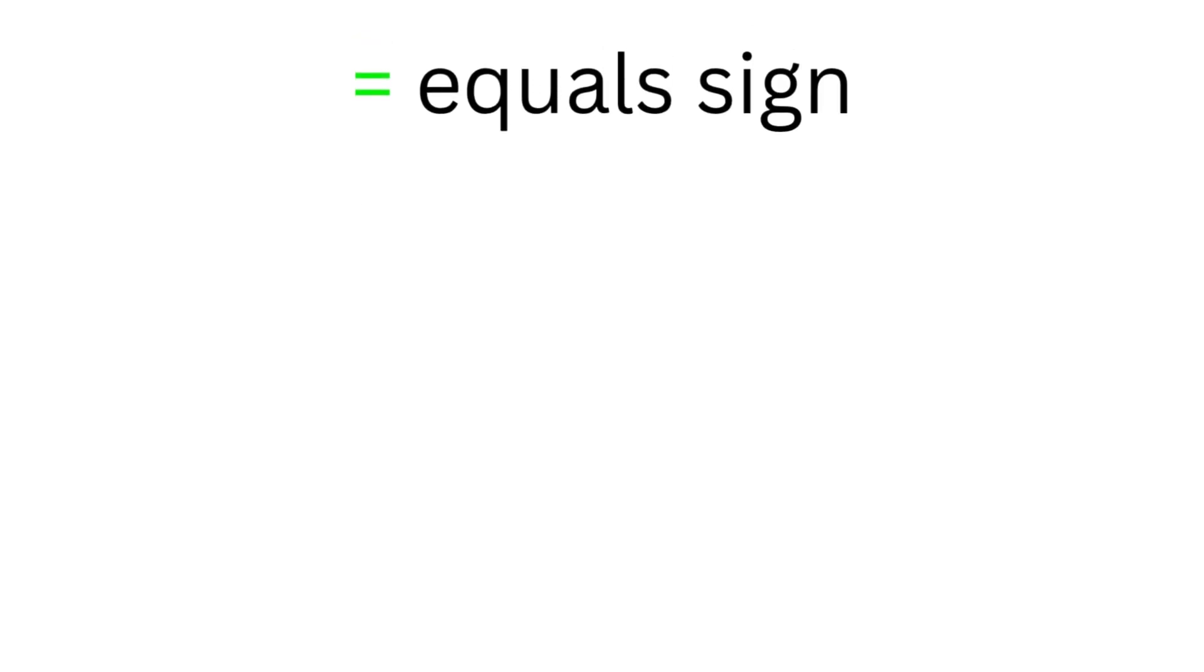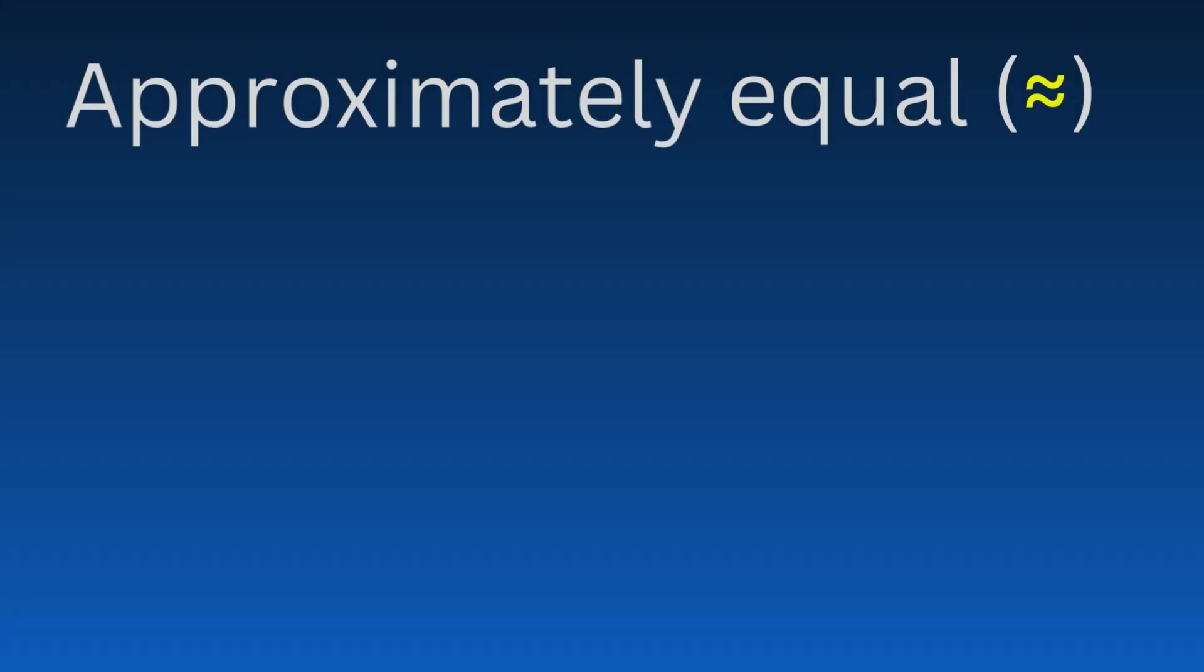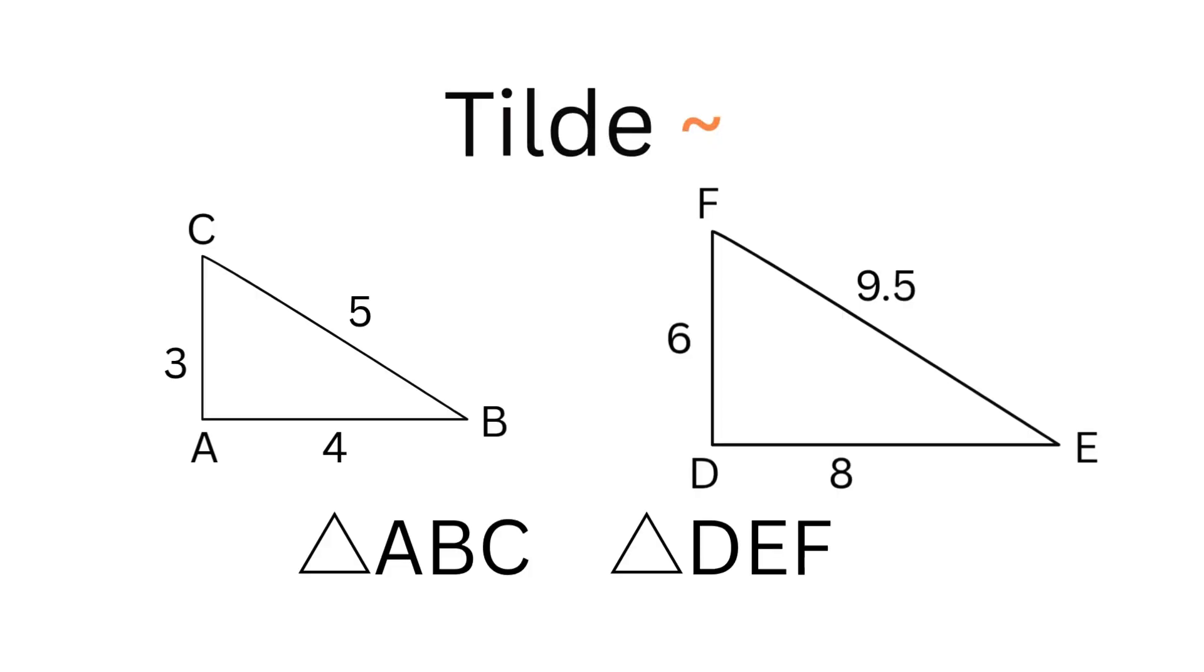The equal sign, made up of two lines of equal length, shows that two expressions are equal. Its opposite is the not equal sign, which means the expressions are not equal. The approximately equal sign is used when two values aren't exactly the same but are close enough. A tilde can also be used instead, though it can also mean similarity or proportionality.